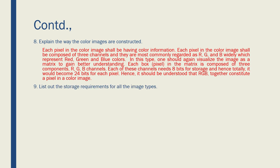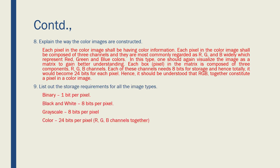List the storage requirements for all image types. Binary: 1 bit per pixel. Black and white: 8 bits per pixel. Grayscale: 8 bits per pixel. Color: 24 bits per pixel, which is the combination of R, G, and B together.